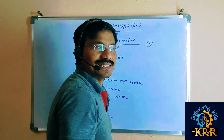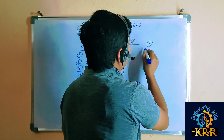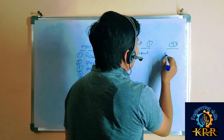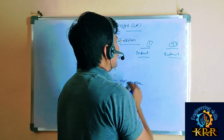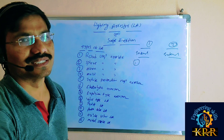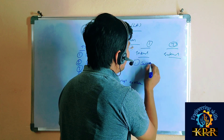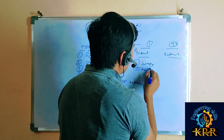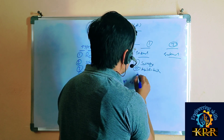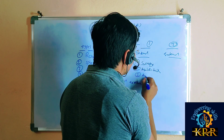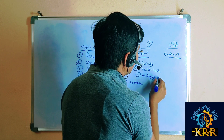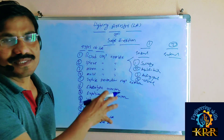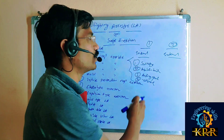The high voltage causes may be classified into two types: one is called internal cause and the second one is called external cause. The internal causes of high voltage are: first, switching operations; second, insulation failure; third, arcing or grounding; and fourth, resonance. Because of these four reasons, high voltage is produced internally.